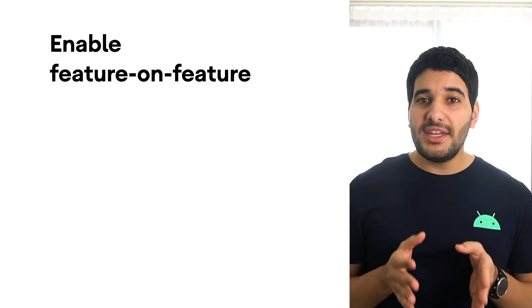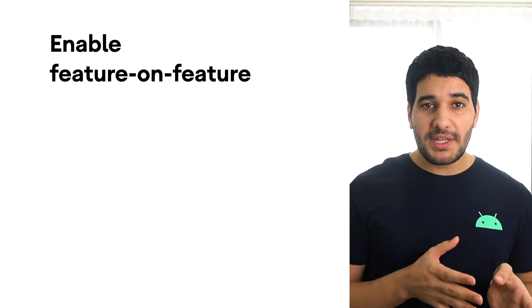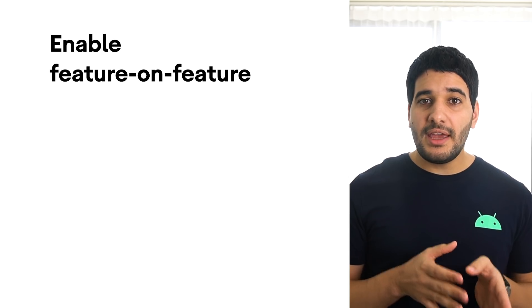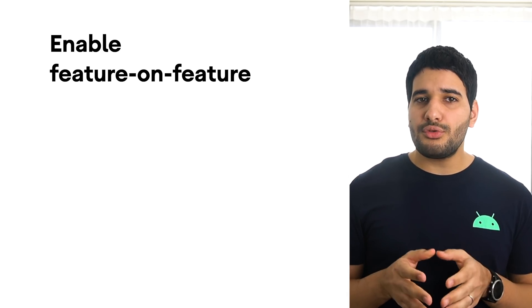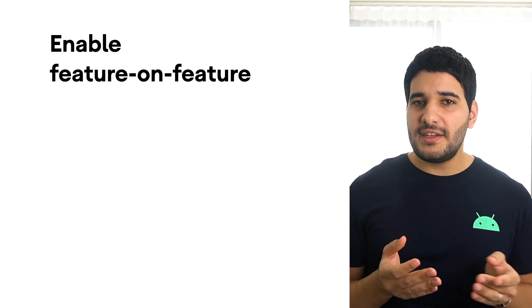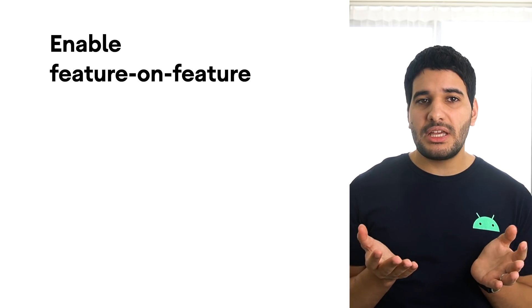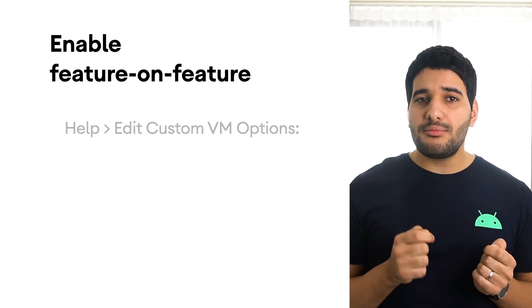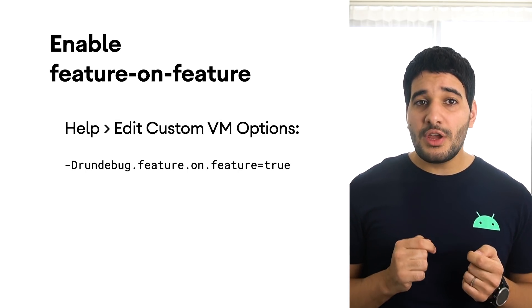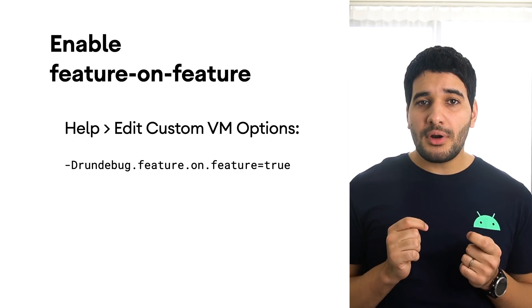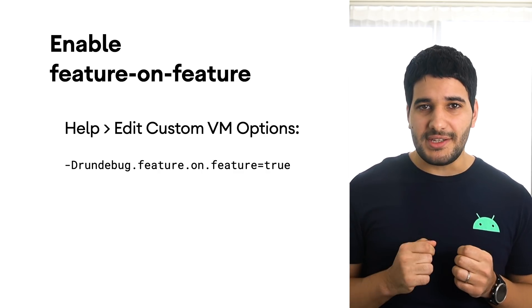Additionally, you should enable the feature-on-feature dependency feature in Android Studio to support the feature when editing the run configuration. You do that by clicking Help > Edit Custom VM Options from the menu bar and including the following properties.